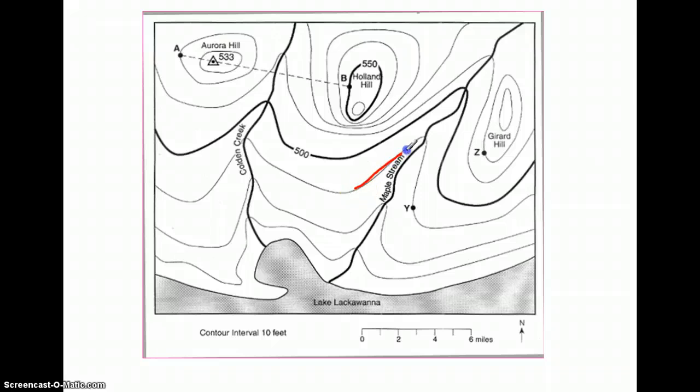So I can see a V here. I can see a V here. I even see one way up here. So again, the tip of the V shows us where the water is coming from. So in this case, Maple Stream is coming from up here. This is the source.